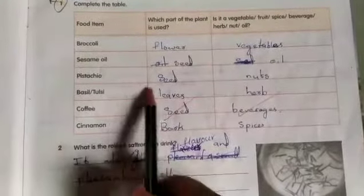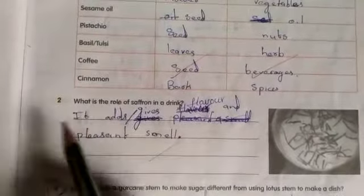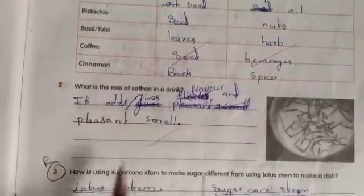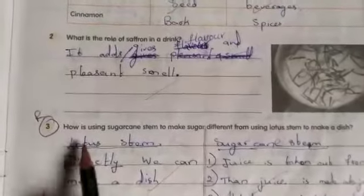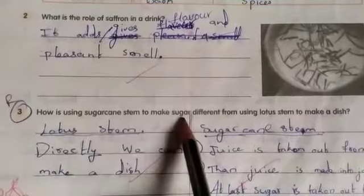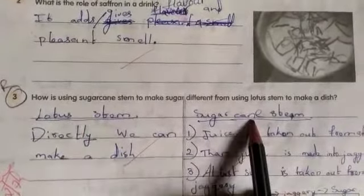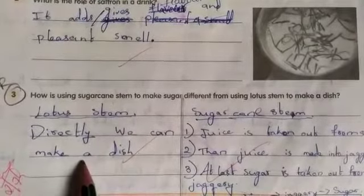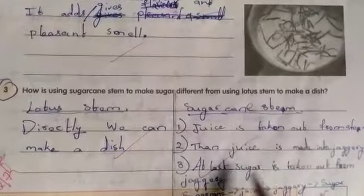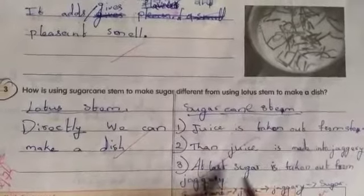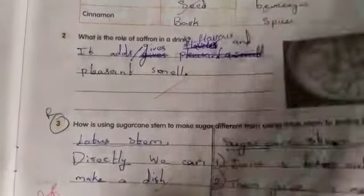You have to write this table — write it once, children, in your revision part. What is the role of saffron in a drink? It adds flavor and a pleasant smell to a drink or any food item you are preparing. Third question: how is using sugarcane stem to make sugar different from using lotus stem to make a dish? Lotus stem can directly be used to make a dish, whereas for sugarcane stem, the juice has to be extracted, made into jaggery, and then sugar is taken from the jaggery. Write this difference in your revision part, children.